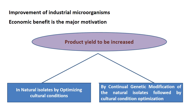If we can have an industrial strain capable of growing at a faster rate and producing the industrial product at a faster rate with high production potential, then it will improve the economic benefit of the industrial fermentation. So the improvement of industrial microorganisms in terms of their productivity as well as their other characteristics is driven by economic benefit as the major motivation.